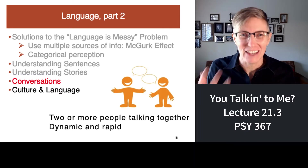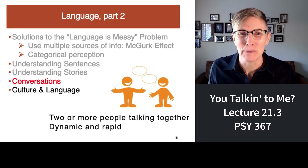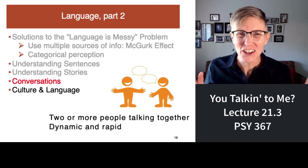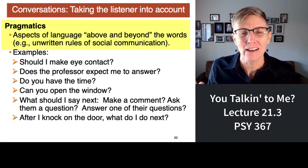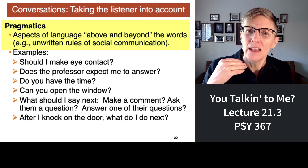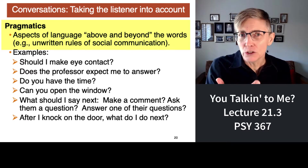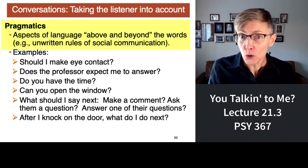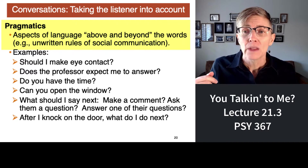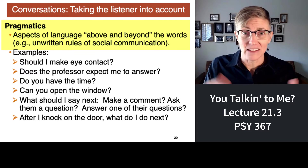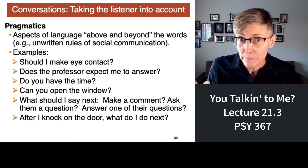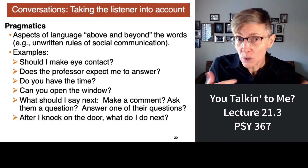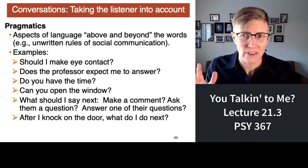What do we have to do to have a conversation with somebody else? It turns out, in addition to all the stuff that we've already talked about, there are these pragmatic aspects of language that we have to solve. For example, if I'm talking to you, should I be looking at you or somewhere else? If I'm in class and I ask the class a question, do I mean that I want you to give me an answer, or do I just want you to think about it?